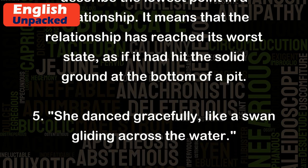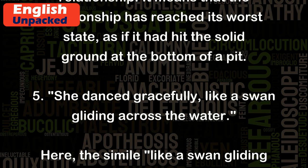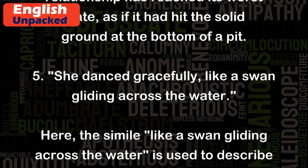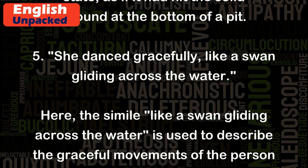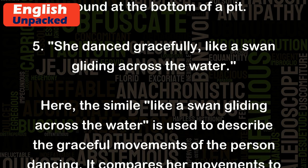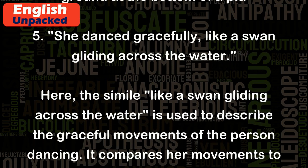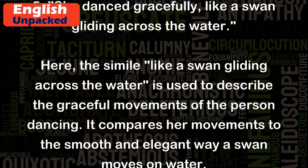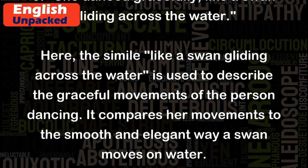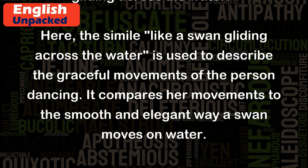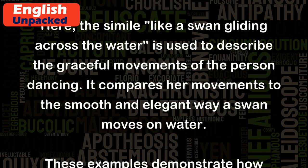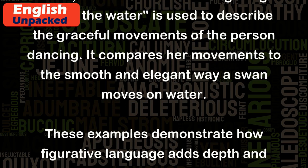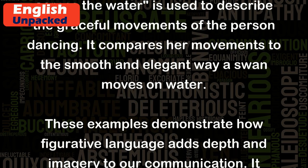Example 5: "She danced gracefully, like a swan gliding across the water." Here, the simile "like a swan gliding across the water" is used to describe the graceful movements of the person dancing. It compares her movements to the smooth and elegant way a swan moves on water.